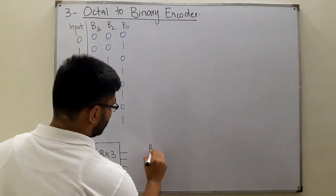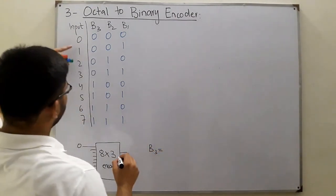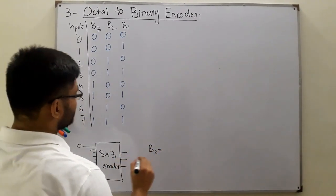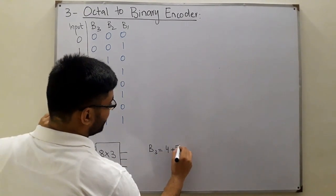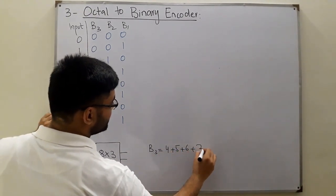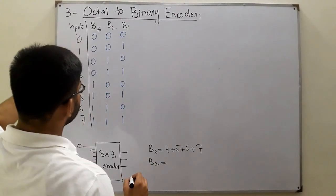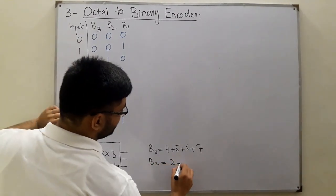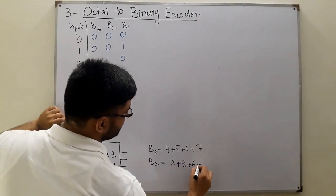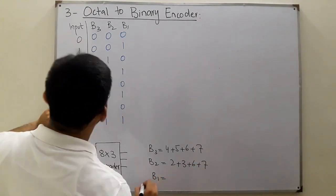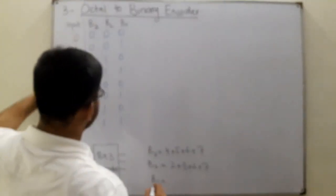Let's write it here. First for b3, b3 is high for 4, 5, 6, and 7, so it would be 4 or with 5 or with 6 or with 7. b2 we have 2, 3, 6, and 7. And finally b1, we have 1, 3, 5, and 7.